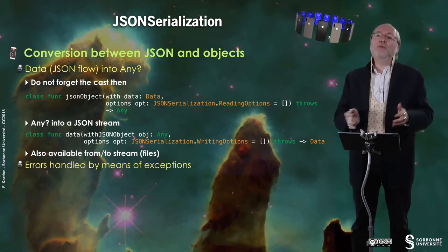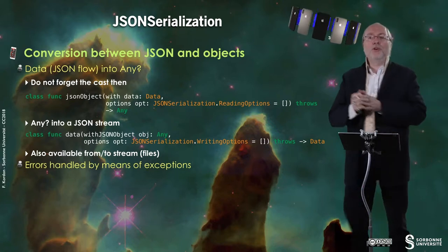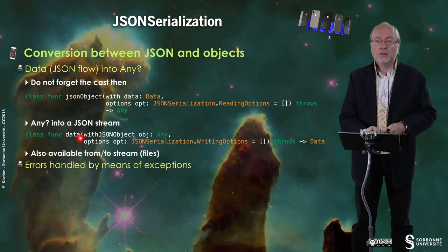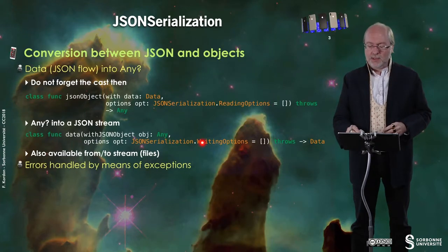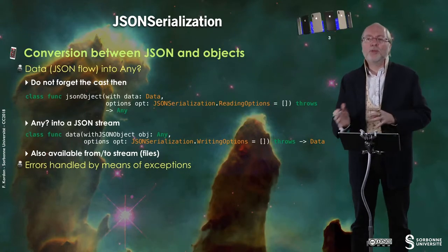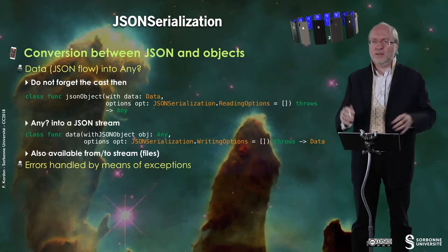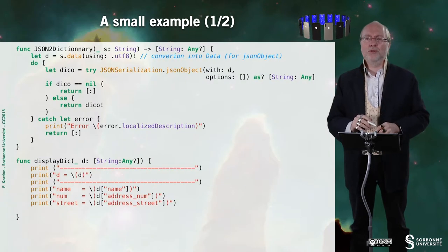Conversely, you can convert Any question mark into a JSON stream with this method. And in both cases, errors are handled by means of exception. You can pass some options that will give you information about encoding, et cetera. Have a look at the fantastic manual for more information.